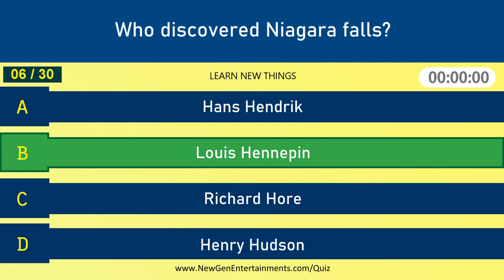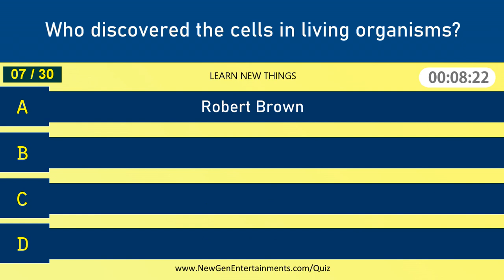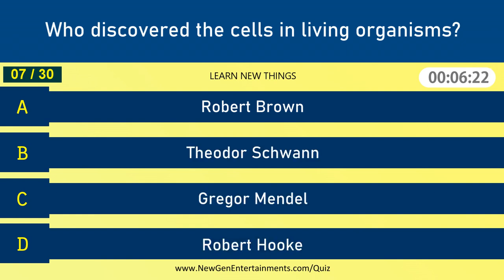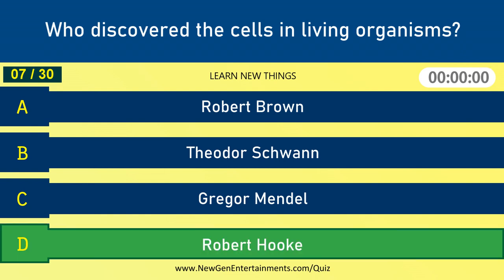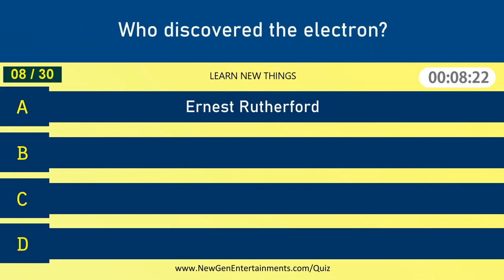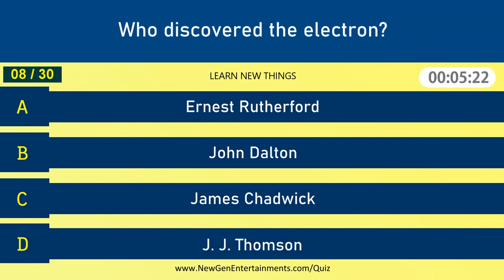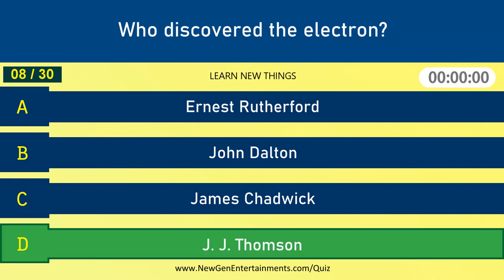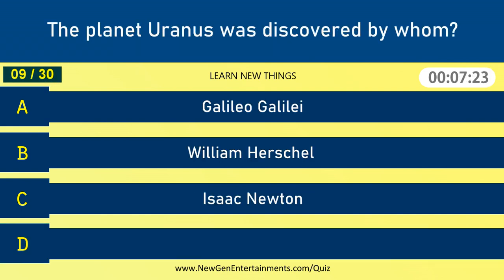Oxygen. Who discovered Niagara Falls? Luis Hennepin. Who discovered the cells in living organisms? Robert Hooke. Who discovered the electron? J.J. Thomson.